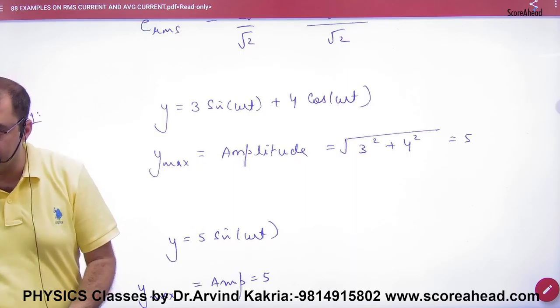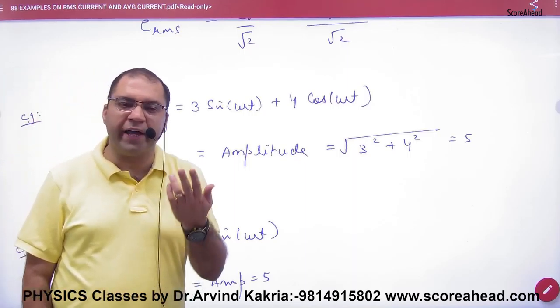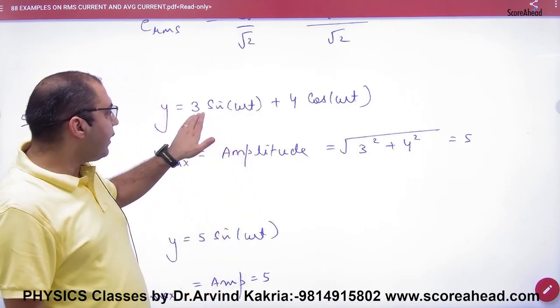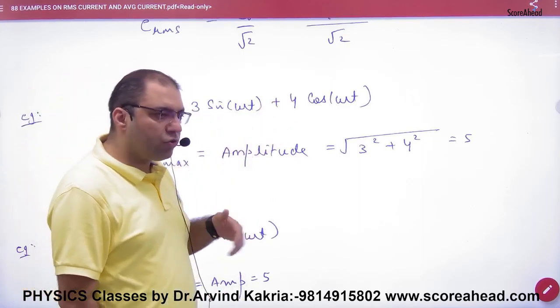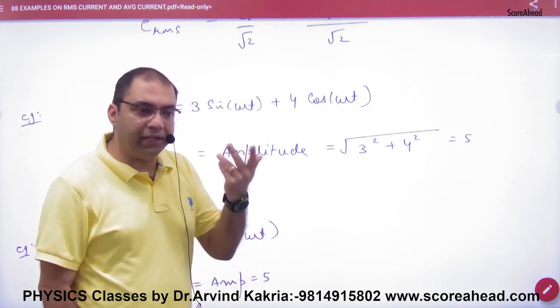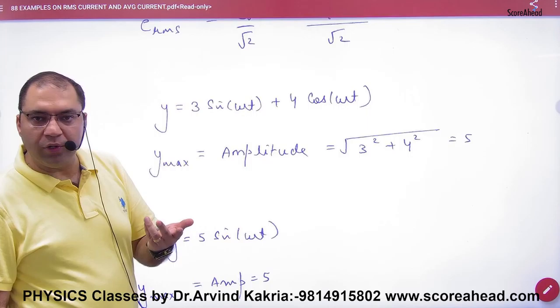And remember, y was a vector quantity. Displacement or amplitude vector. So one vector value is 3 and one vector value is 4, with sin and cos. How much is the phase difference? 90 degrees. So what would the net value be?